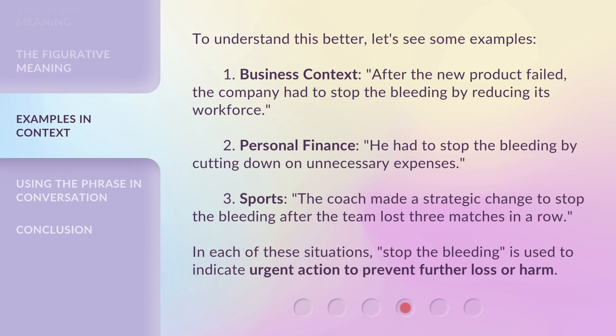To understand this better, let's see some examples. One, business context: after the new product failed, the company had to stop the bleeding by reducing its workforce. Two, personal finance: he had to stop the bleeding by cutting down on unnecessary expenses. Three, sports: the coach made a strategic change to stop the bleeding after the team lost three matches in a row. In each of these situations, stop the bleeding is used to indicate urgent action to prevent further loss or harm.